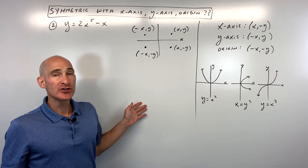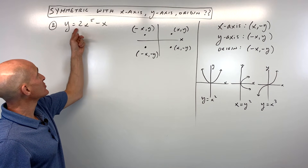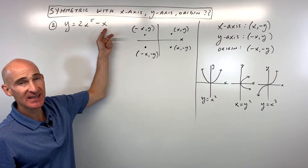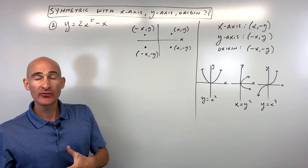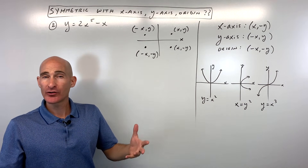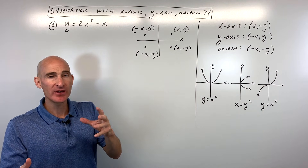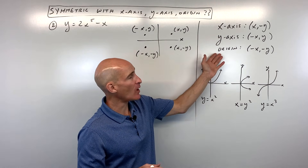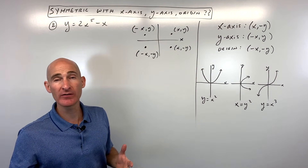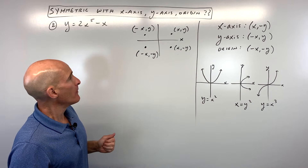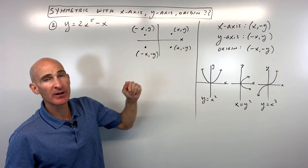Number two — see if you can do this one: y equals 2x to the fifth minus x. If you have a graphing calculator, you can always graph these and see whether it's symmetric with respect to the x, y, or origin, or maybe two or three of those. The other way is doing the algebraic test.